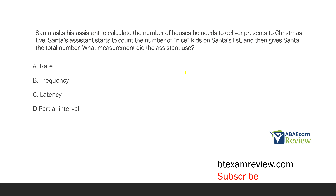Santa asks his assistant to calculate the number of houses he needs to deliver presents to on Christmas Eve. Santa's assistant starts to count the number of nice kids on Santa's list and then gives Santa the total number. What measurement did the assistant use? We have a measurement question. We're measuring the number of something, so already you should be thinking frequency or rate. Frequency and rate have to do with count. Latency, inter-response time, and duration have to do with time.